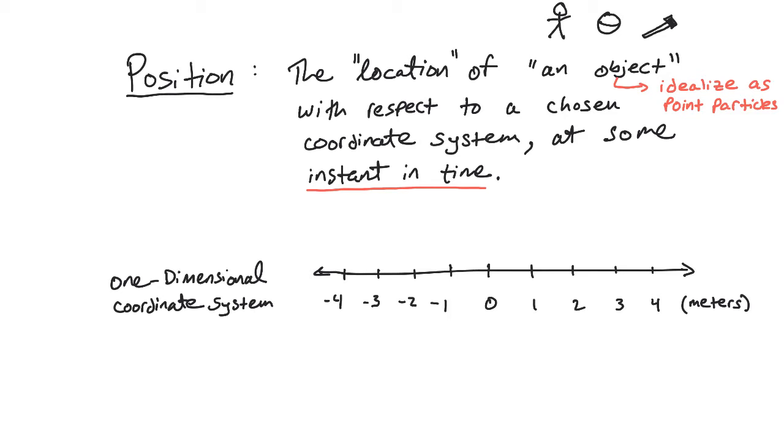All right, now we need to be really clear about what is the object in order to talk about where it's located. So I have a person, maybe this is a planet or a sphere, and here's a hammer, and these are more complex objects than a single point, and what we're going to do